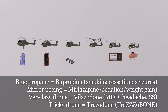Next is the very lazy drone for vilazodone. Vilazodone is used in treatment of major depressive disorder by inhibiting serotonin reuptake. Toxicity includes headache, diarrhea, nausea, and anticholinergic effects, and it may cause serotonin syndrome. Then there is the tricky drone for trazodone. Trazodone is used for depression but primarily for insomnia — that's why the tricky drone is sleeping on top of the helicopter. Toxicity involves priapism — people like to say 'trazabone' to remember both the sleep effect and the erection.